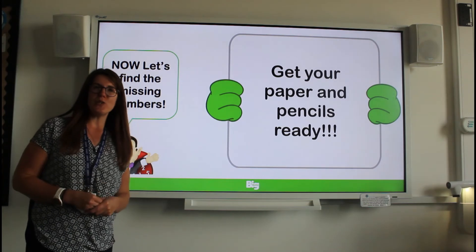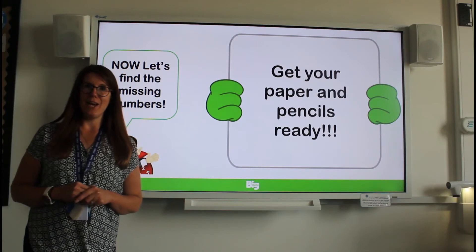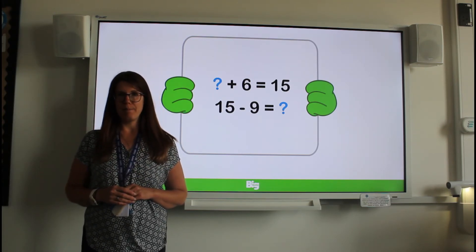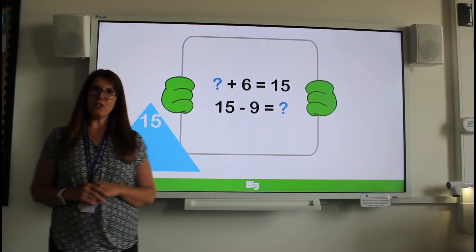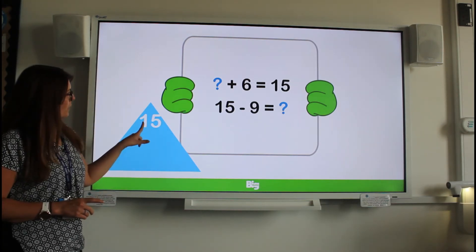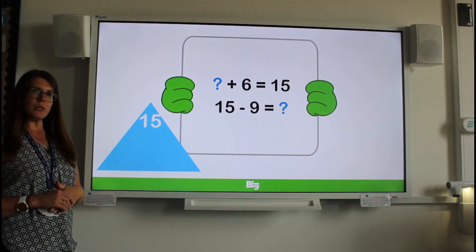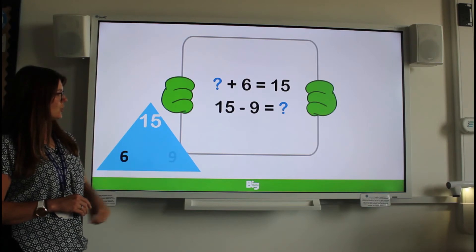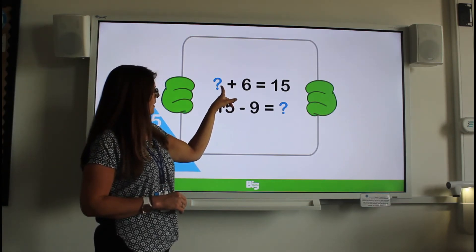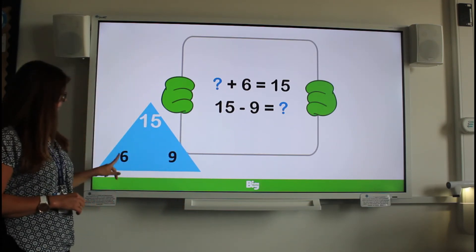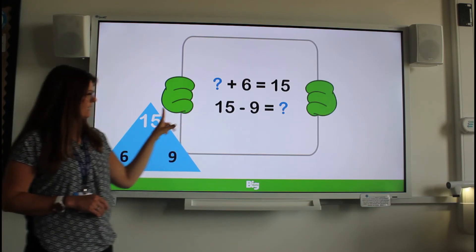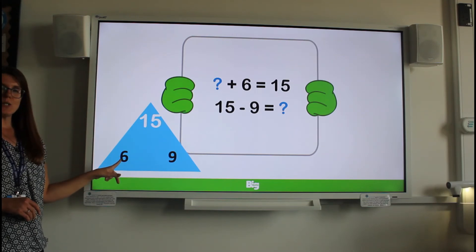Now we're going to use what we have learnt with fact families to help us find the missing number. Have a look at these two calculations — they are part of the same fact family. To help you, you might want to draw a fact family triangle. Remember the biggest number goes at the top and then the two switchers go at the bottom. We can see that 15 is our biggest number that goes at the top, and then our two switchers — six and nine — go at the bottom. So now we can see that the missing number we add to six to make 15 is nine, and 15 take away nine leaves us with six.